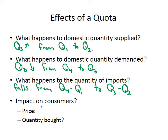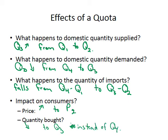The impact on consumers: the price has gone up to price with quota, and the quantity bought has fallen to Q3 instead of Q4. The quantity bought is a combination of imports and domestically produced goods, and consumers are indifferent between the two — they are solely influenced by the change in price.